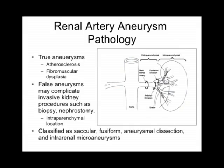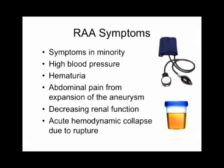False aneurysms or pseudoaneurysms may be complications of invasive procedures in the kidney, such as biopsy or nephrostomy, where branch arteries are injured within the parenchyma — these have an intra-parenchymal location. Aneurysms can also be classified by morphology: saccular or sac-shaped, fusiform or football-shaped dilatation. They can be associated with dissection, subsequent dilatation, or intra-renal microaneurysms. Symptoms occur only in a minority of patients. The case patient had back pain, but that was musculoskeletal — most patients don't have pain specifically associated with the aneurysm.